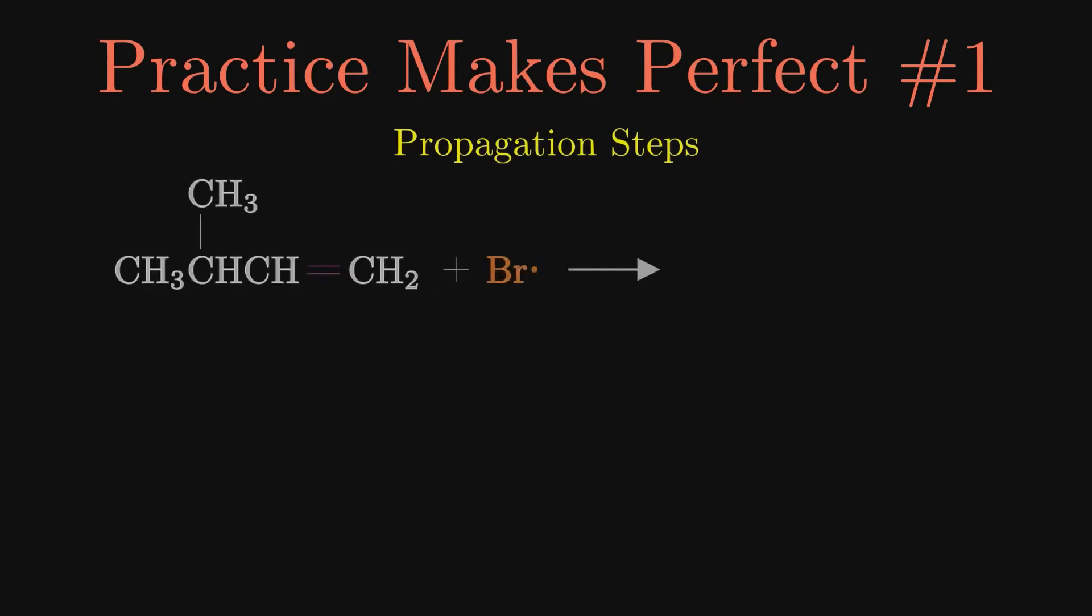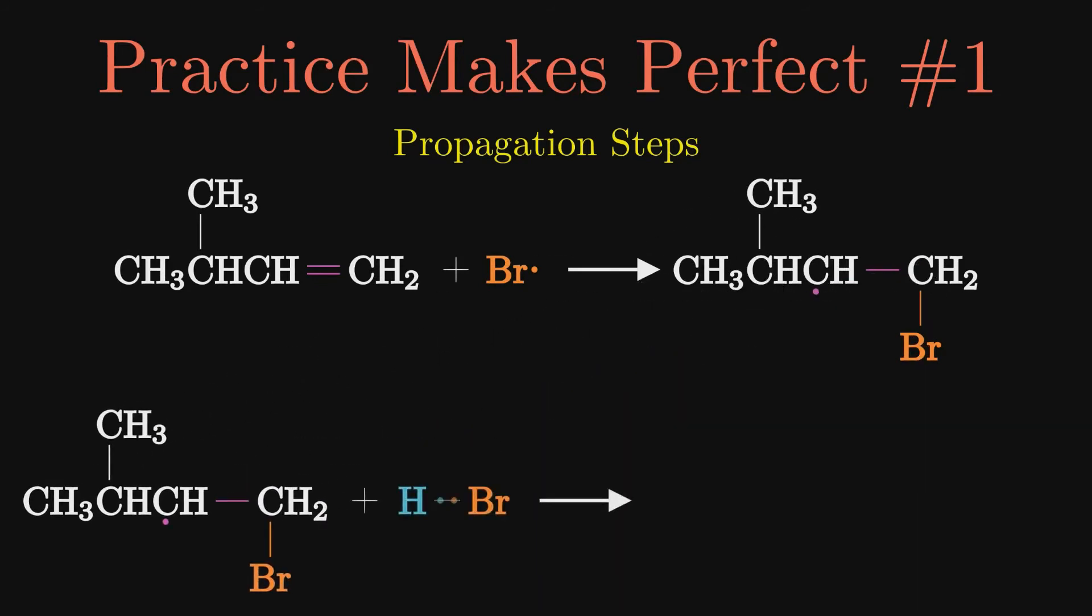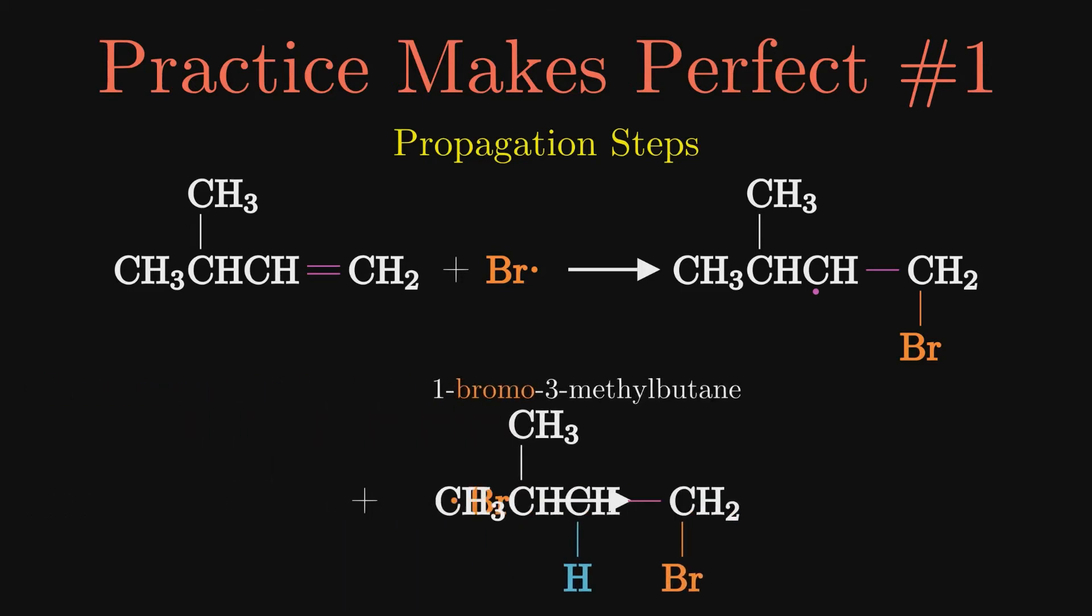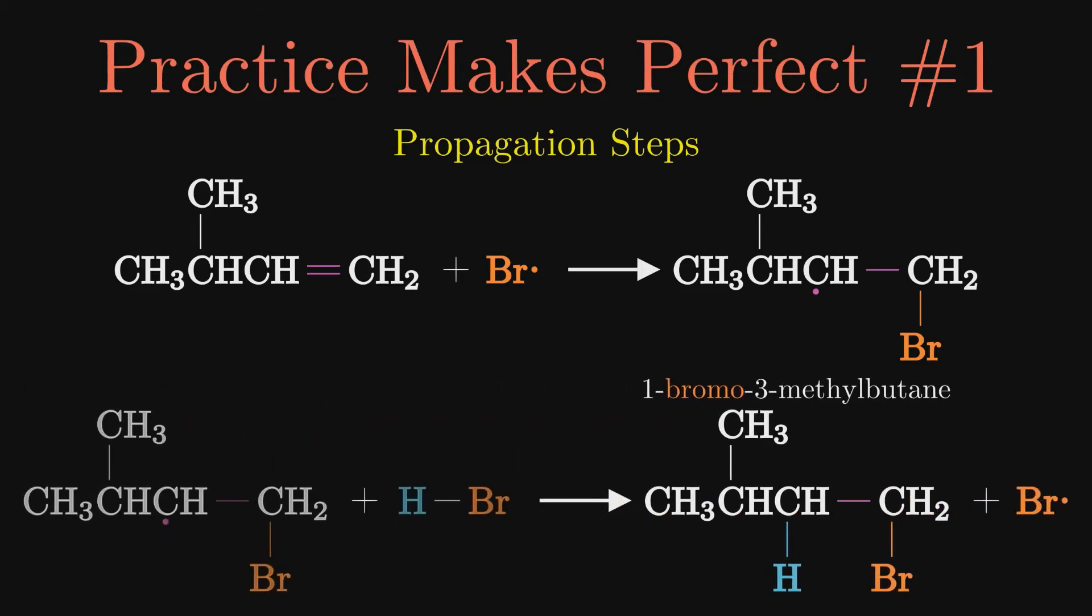The first propagation step involves the bromine radical reacting with the alkene. This forms the alkyl bromide radical. The other propagation step is when the alkyl bromide radical reacts with hydrogen bromide. This forms the expected product and leaves another bromine radical.